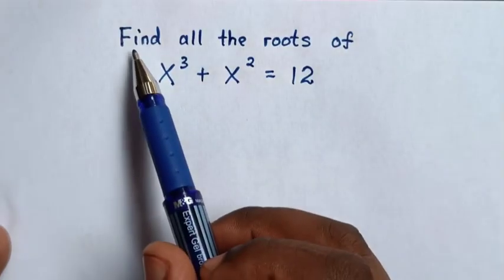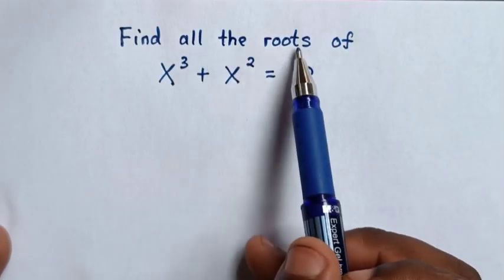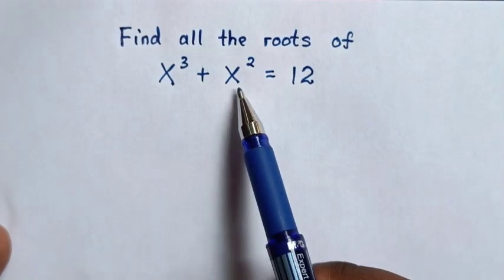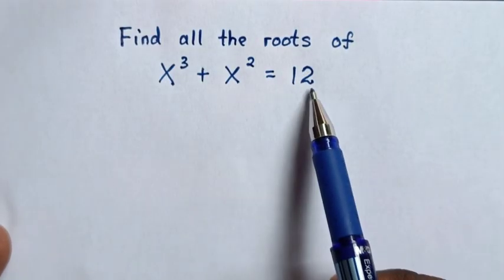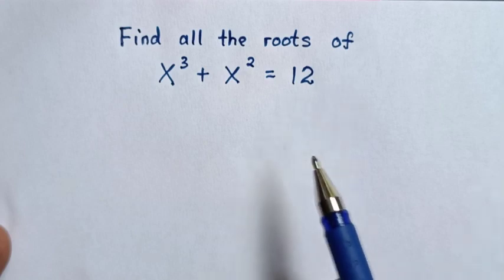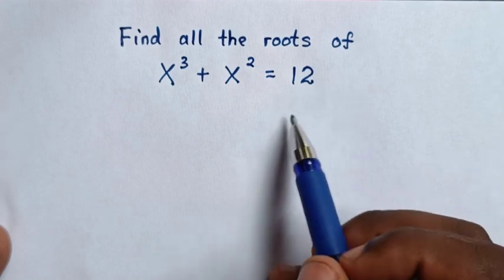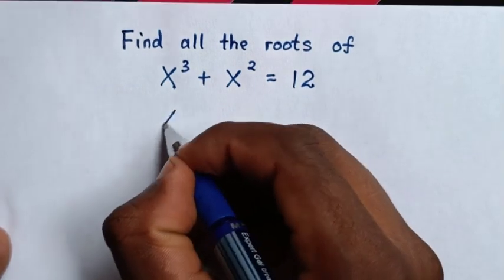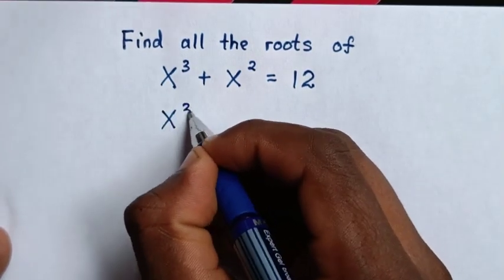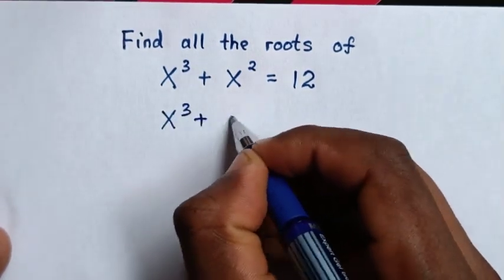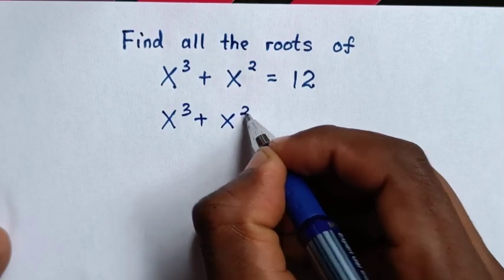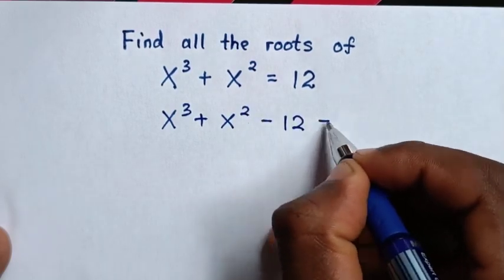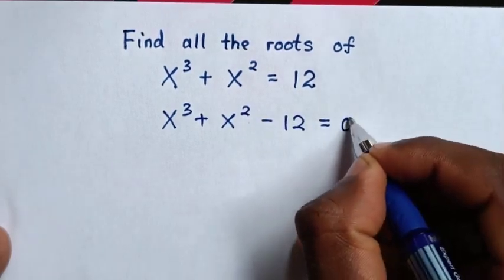Hello! How to find all the roots of x³ + x² = 12. First, we take this 12 to the left side, then it will be x³ + x² - 12 = 0.